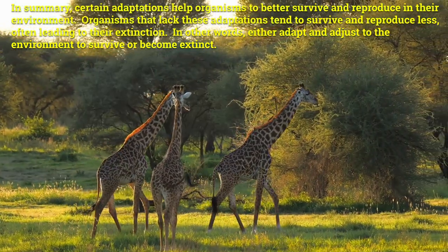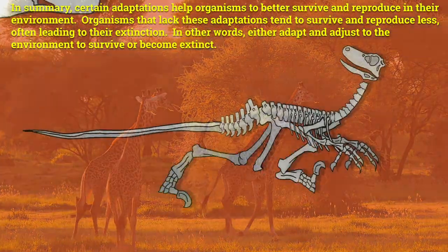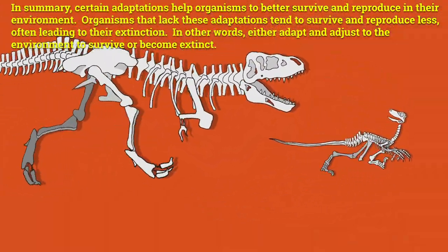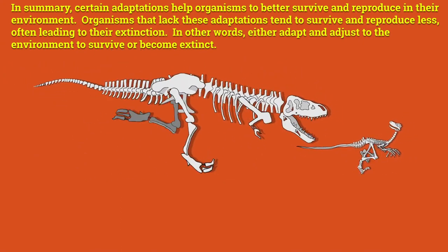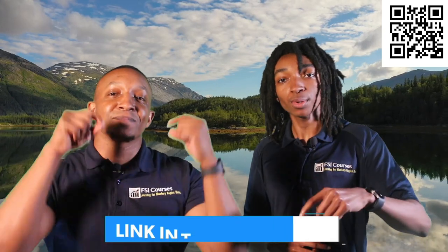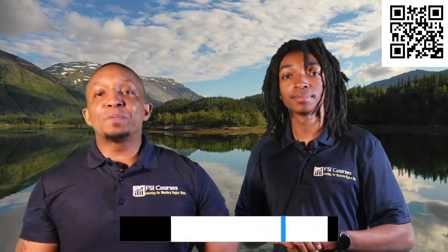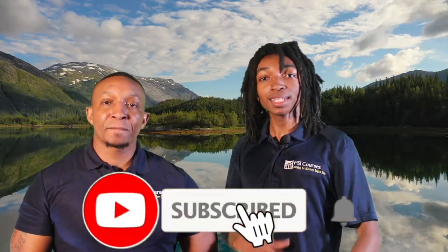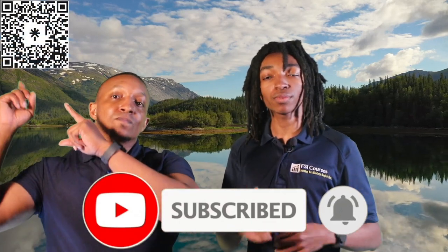In summary, certain adaptations help organisms to better survive and reproduce in their environment. Organisms that lack these adaptations tend to survive and reproduce less, often leading to their extinction. In other words, either adapt and adjust to their environment to survive, or become extinct. Now let's test your knowledge to see how proficient you are by taking our video quiz. Use your electronic devices to scan the QR code at the top right of the screen, or click the link in the description box below. Remember, 80% or higher is proficiency — record your results on your proficiency sheet, and keep going because it's not over until you win. Don't forget to hit that subscribe button, click that bell icon, and scan the QR code to contact us and support more of our awesome content. Peace, and have a positive, productive day.